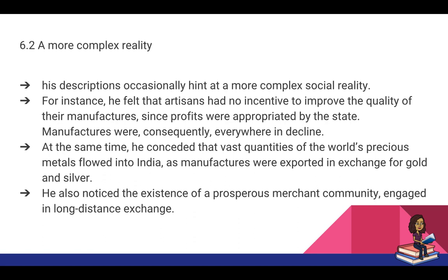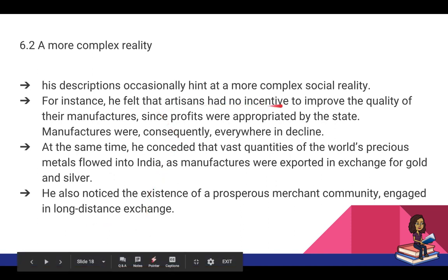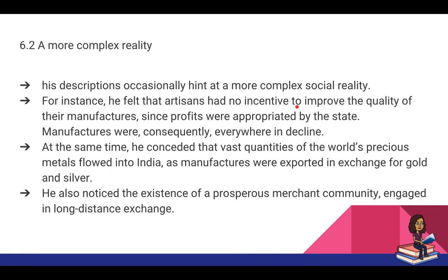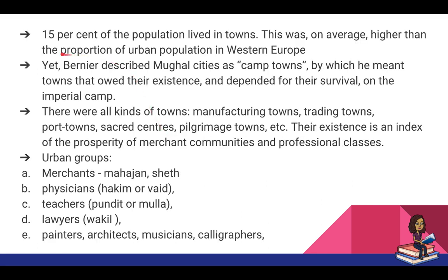Local and regional Indian records show the reality was far more complex than what Bernier saw. For example, even while Bernier said artisans had no incentive to improve the quality of their manufactures since profits were taken by the state, he also agrees that vast quantities of the world's precious metals — particularly gold and silver — flowed into India because there was such great demand for Indian products overseas. He also concedes the existence of prosperous merchant communities engaged in long-distance trade. Furthermore, at that time at least 15 percent of India's population lived in towns — far higher than the urban population in western Europe at the same time.